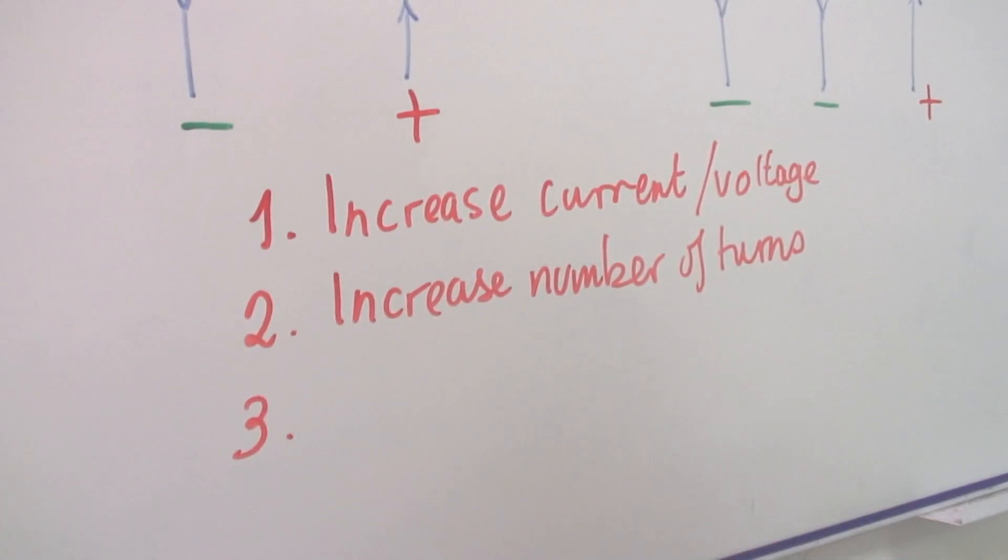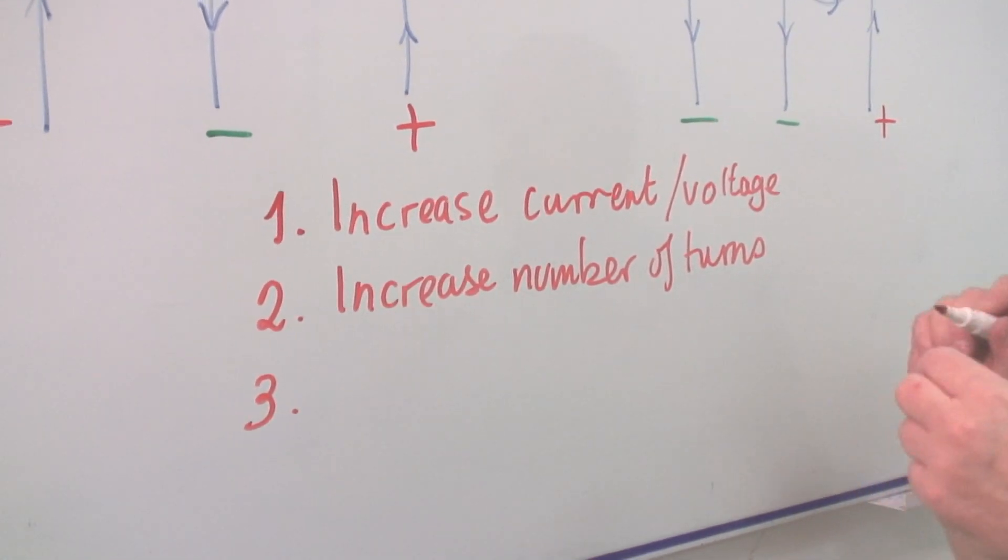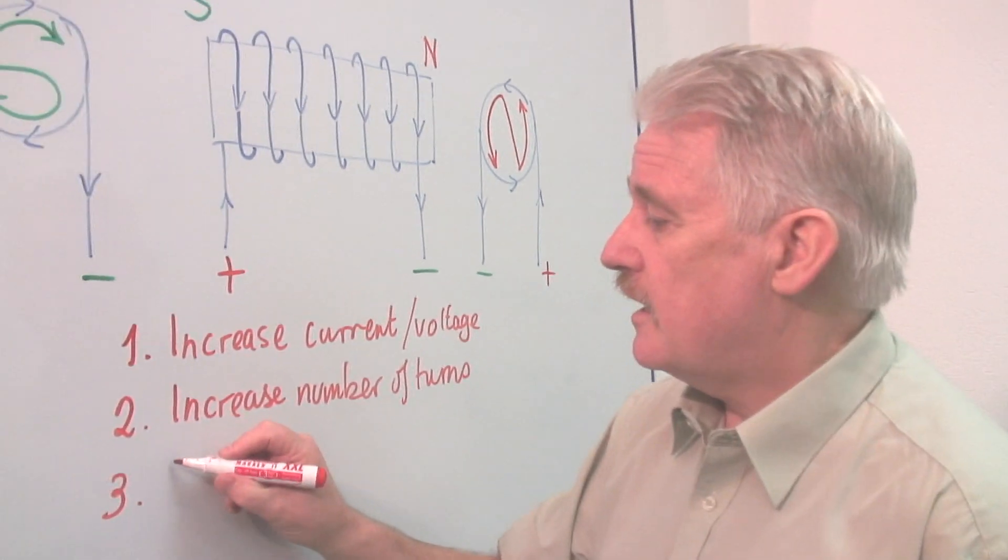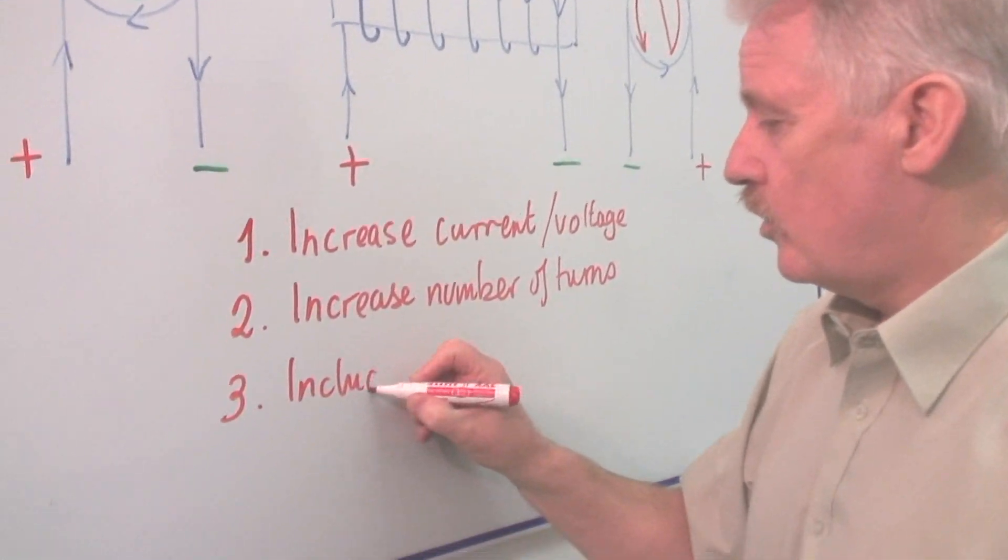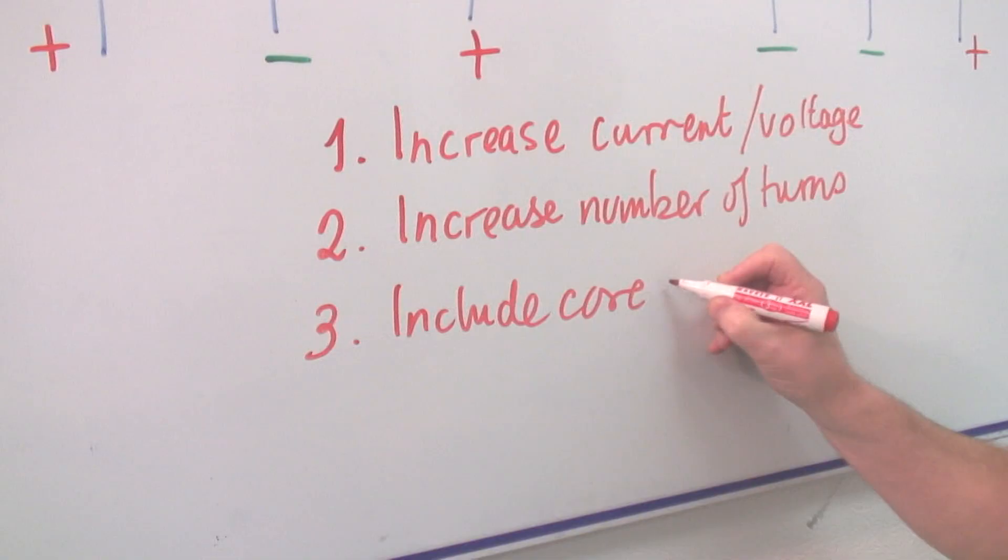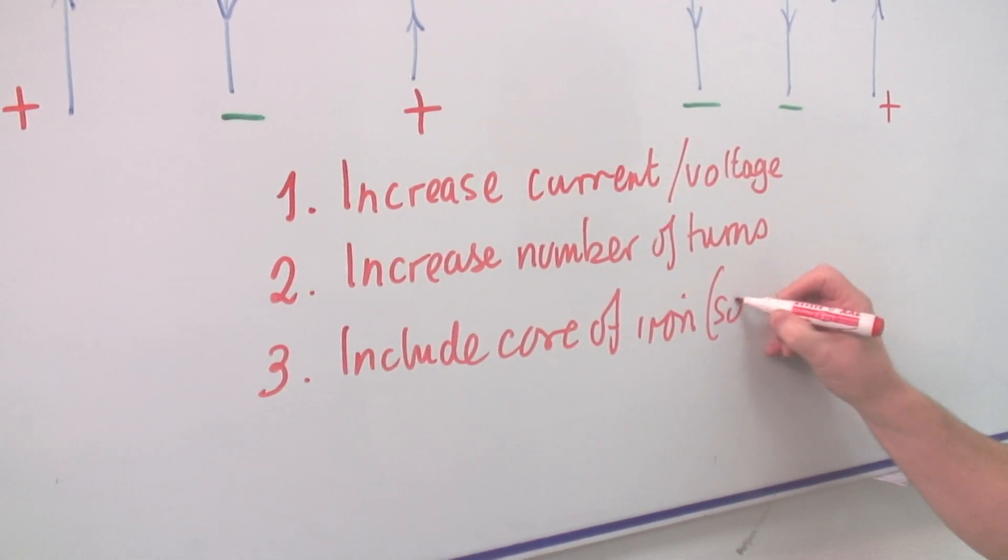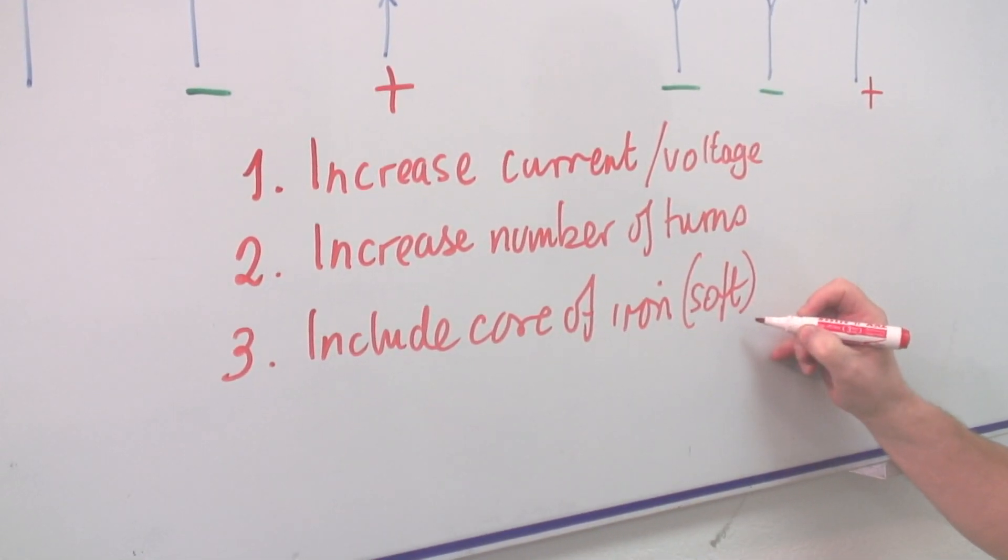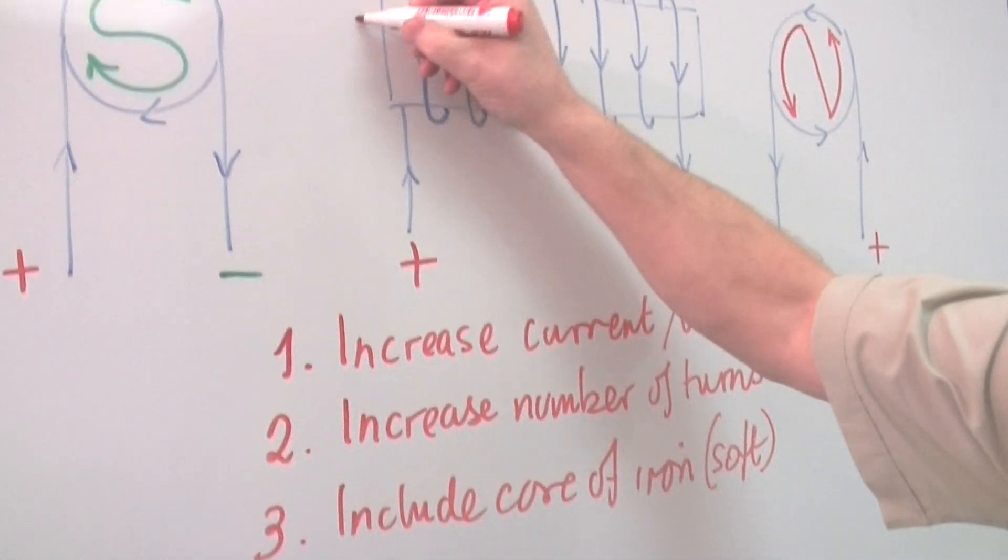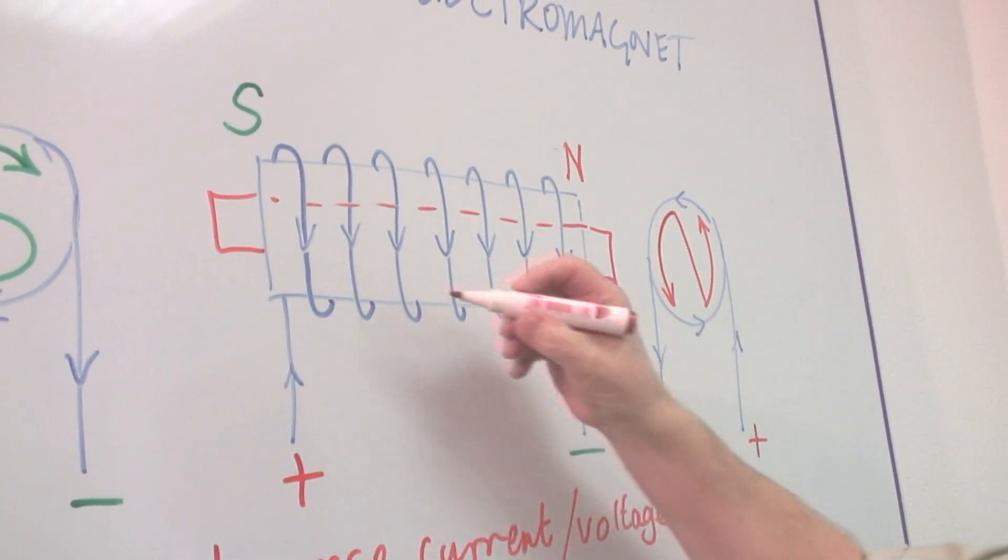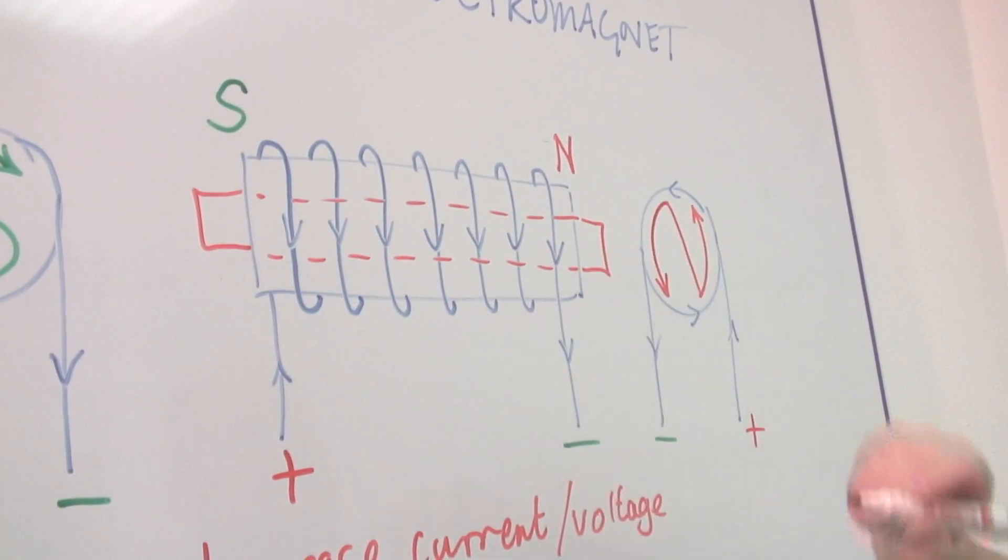The third, and one which is most often employed, is to include a core of iron - soft iron, which is iron that is easily magnetized and demagnetized. This core is placed through the middle of the magnet in this way. You place it through the middle.